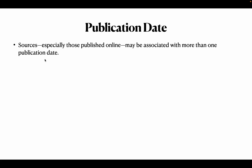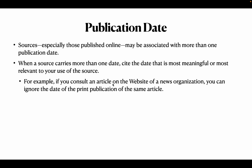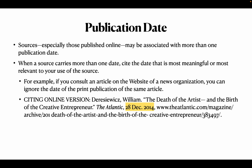Sources published online may have more than one publication date — a print date and an online date for the same article. When a source carries more than one date, cite the date most meaningful or relevant to your work. If you are reading an article online, cite only that date. For example, if you consult an article on a news organization's website, cite the website date and ignore the print publication date. Cite: author name, article title, periodical title, then date of checking online, then URL.